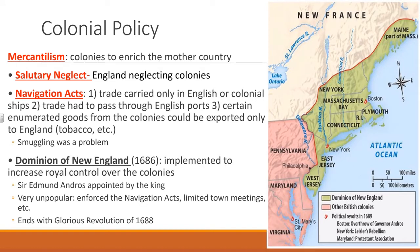All three middle colonies — New York, Pennsylvania, and New Jersey — were demographically, religiously, and ethnically diverse, and together they formed the breadbasket of the colonies. Colonial policy at this time: the colonies existed to enrich the mother country, England. England didn't really care about the 13 colonies except for the money they could make. This period is called salutary neglect — like leaving a kid home with crayons, the colonists were doing their own thing, making money and smuggling.